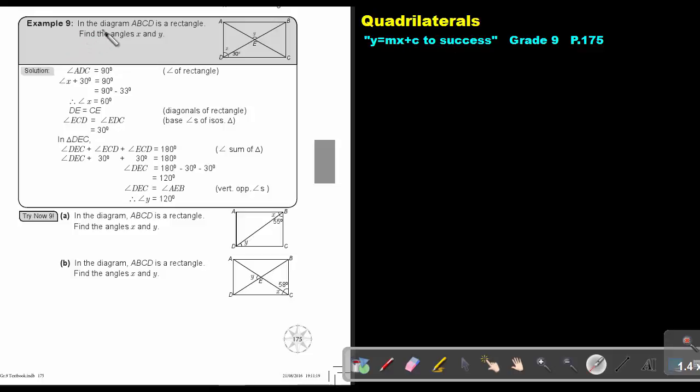Let's look at example 9. In the diagram ABCD is a rectangle. Find the angles X and Y. Let's start.